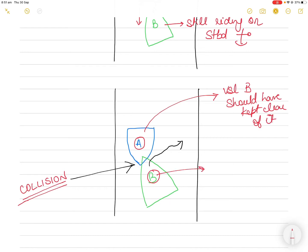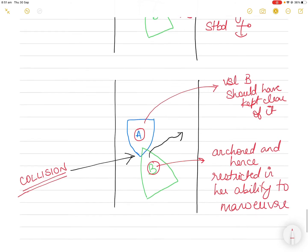Whereas vessel B argued that she was anchored and hence restricted in her ability to maneuver. This was the argument given by vessel B: that because she was anchored, she was restricted in her ability to maneuver and hence she could not keep clear of vessel A.